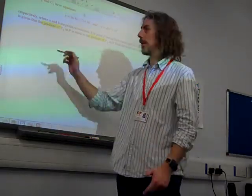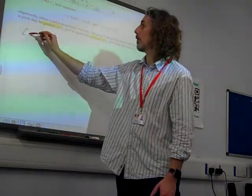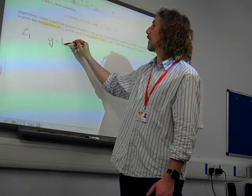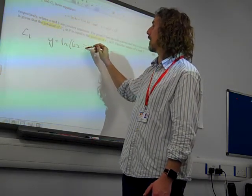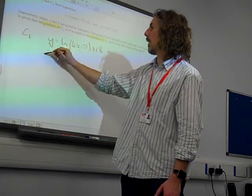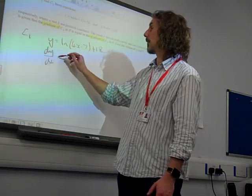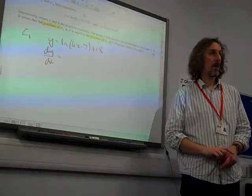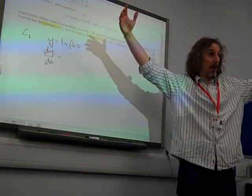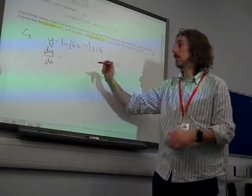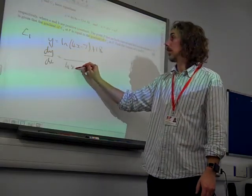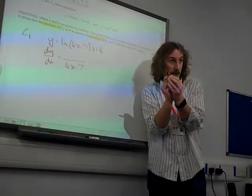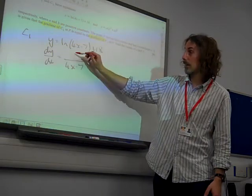So let's work out something with this then. Curve 1, C1, y equals ln(4x minus 7) plus 18. So dy by dx, we're going to leave dy by dx out of this, is, that's natural log of something. So the natural log of something is 1 over the something times the derivative of the inside bit.